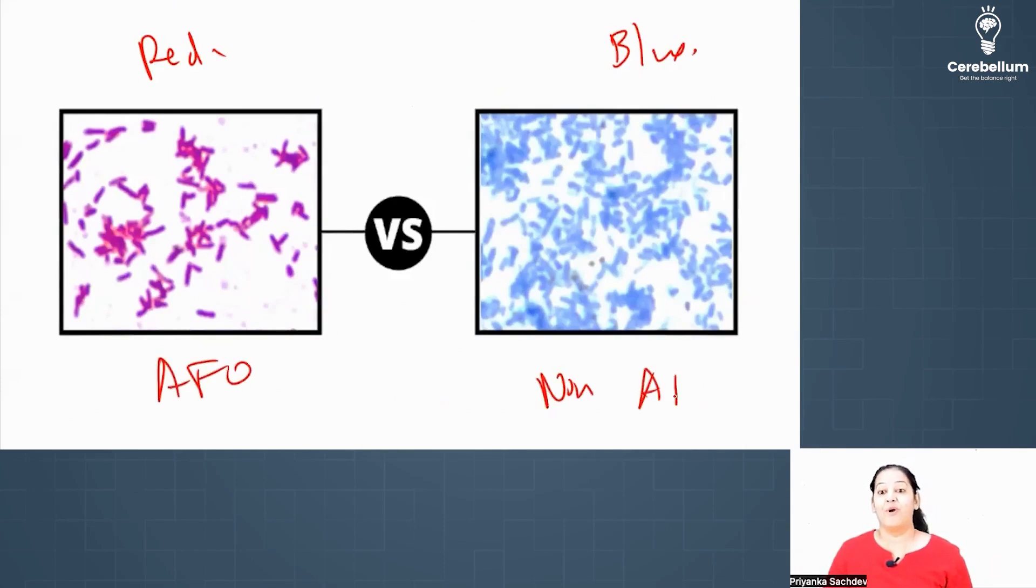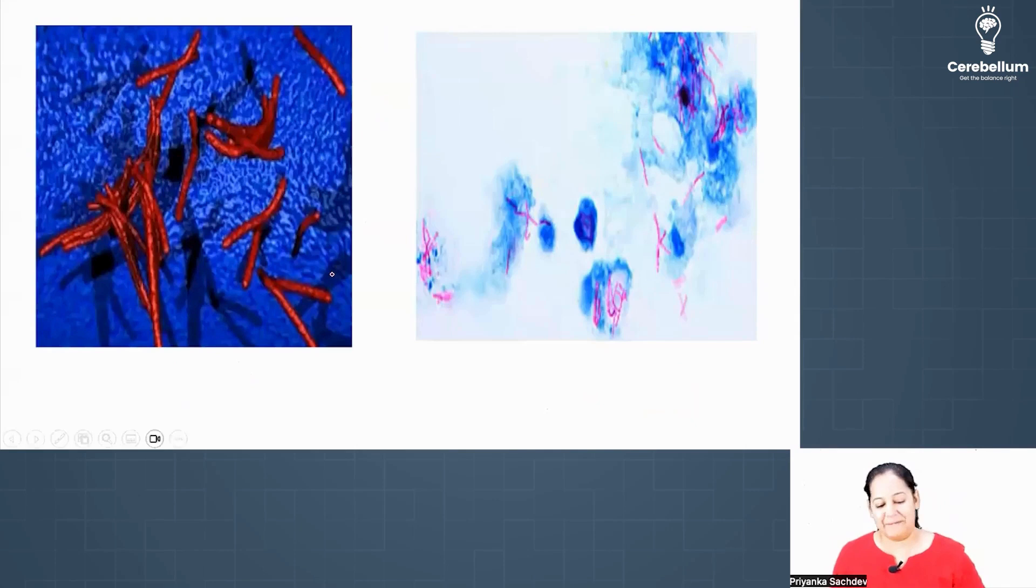What I'm teaching you people, I'm teaching you differential stain, one of the examples of differential stain. So is it differential? Differential stain gives different color to different bacteria. So some are red, some are blue, so it is also a differential stain. Got it?